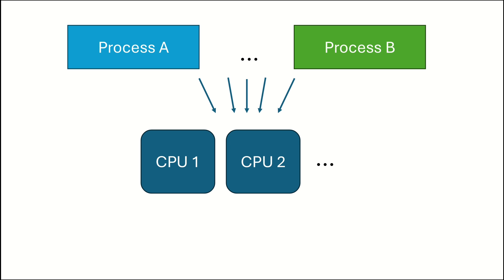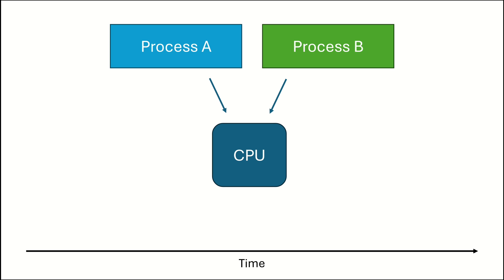It's a problem where you have multiple processes on your system and multiple CPUs and you want to run all these processes at the same time, but you can't, so you have to decide which process comes onto which CPU core at every point in time. And that's called scheduling.